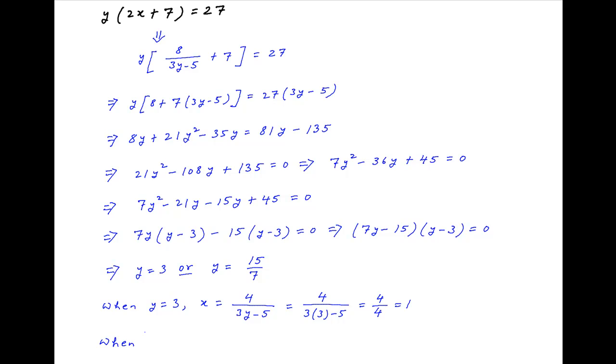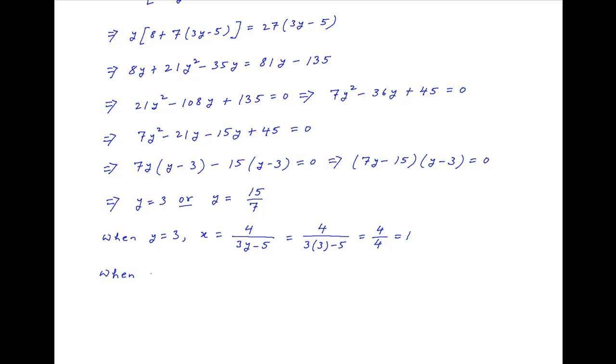And when y is equal to 15 upon 7, x is equal to 4 upon 3 times 15 upon 7 minus 5, which is equal to 4 times 7 divided by 45 minus 35, which is equal to 28 upon 10, which is 14 upon 5.